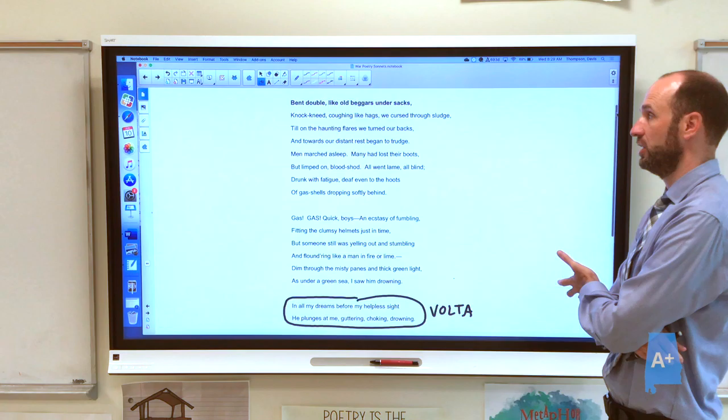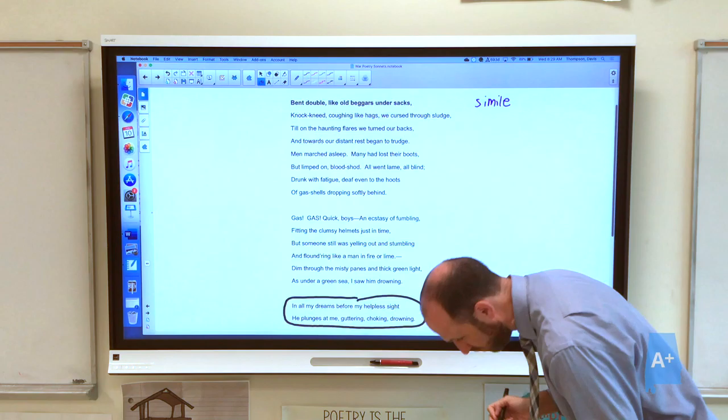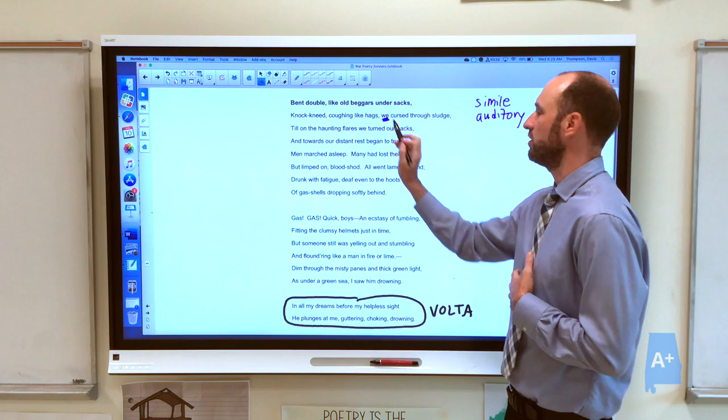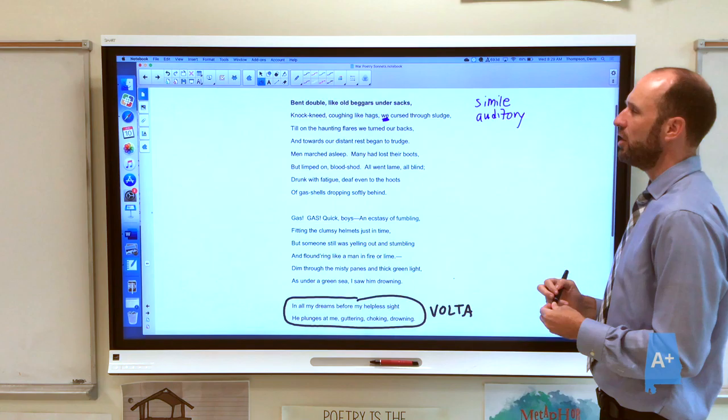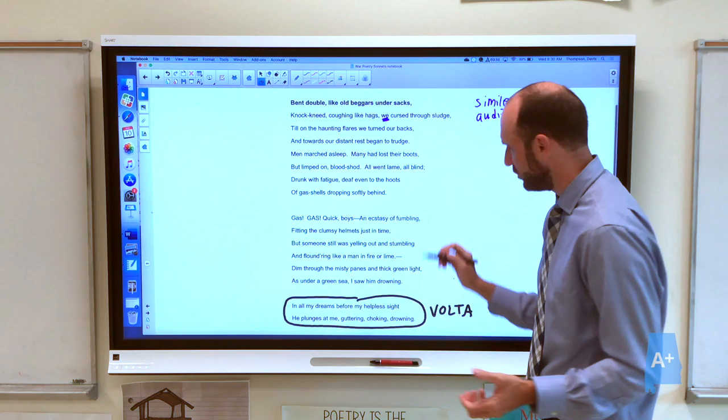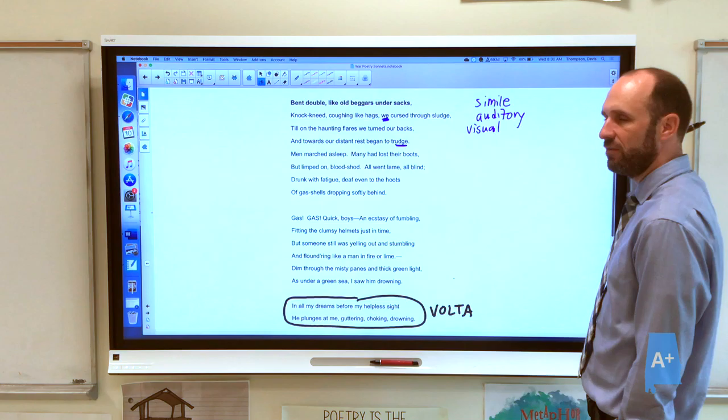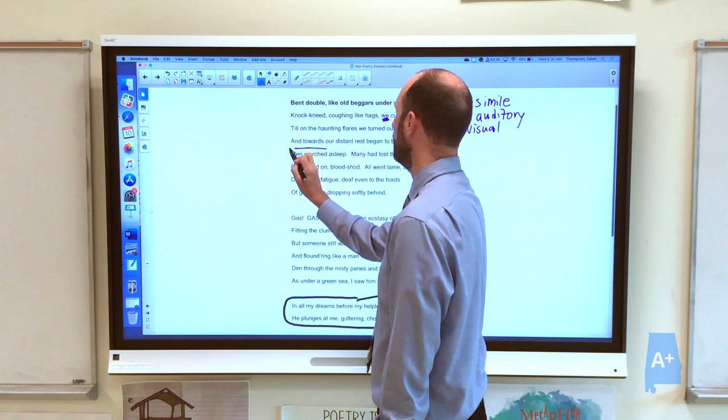So we have a simile. They're compared to old beggars under sacks, which makes them seem pathetic and desperate. They are physically ascribed, bent double and knock-kneed. We have auditory imagery that we can hear them hacking because they've experienced gas attacks. And we notice that our narrator is involved in this. He doesn't say I, he says we. He is part of the army unit. They are cursing through sludge. Again, we are hearing them cursing. Till on the haunting flares we turned our backs and toward our distant rest began to trudge. Trudge is such a good word for diction because it implies a sort of shuffling of their feet as they're moving through the battlefield, through the no man's land. We see a lot of visual imagery as well where we can imagine the flares sort of haunting.